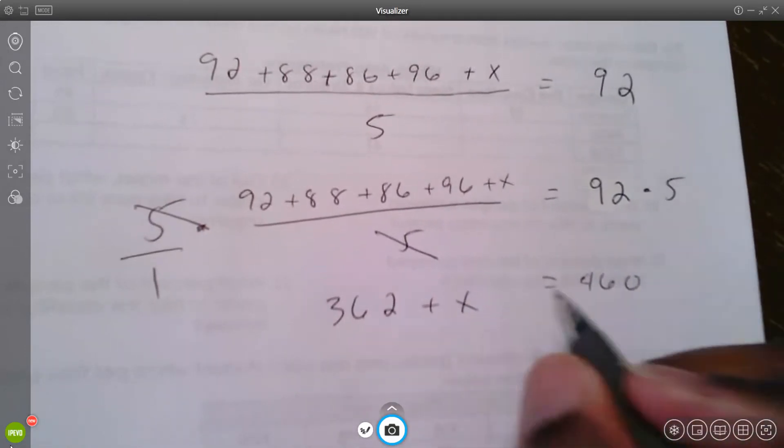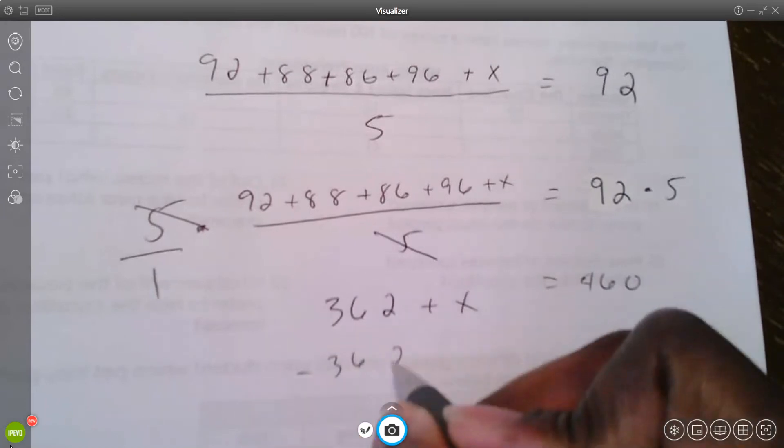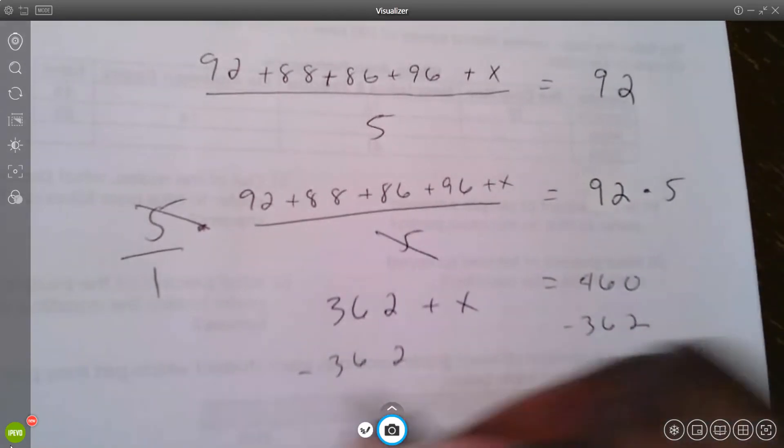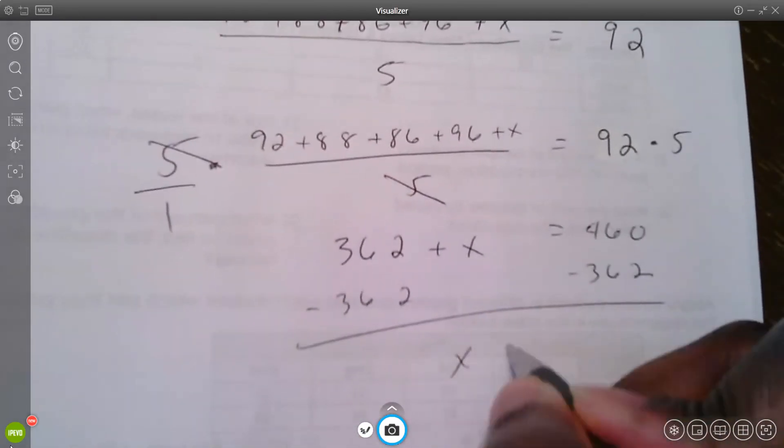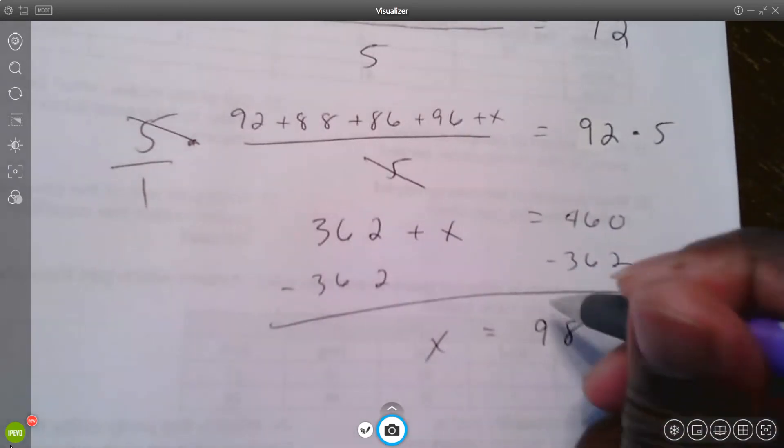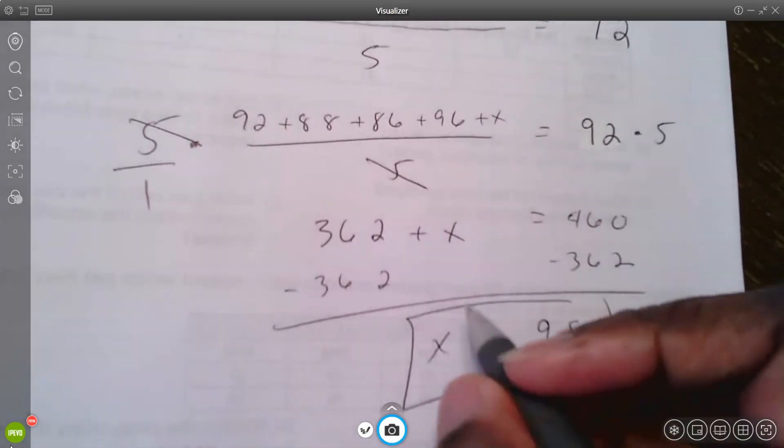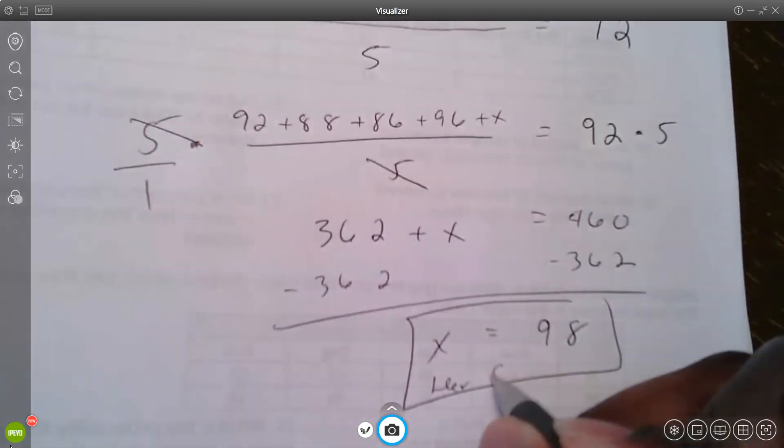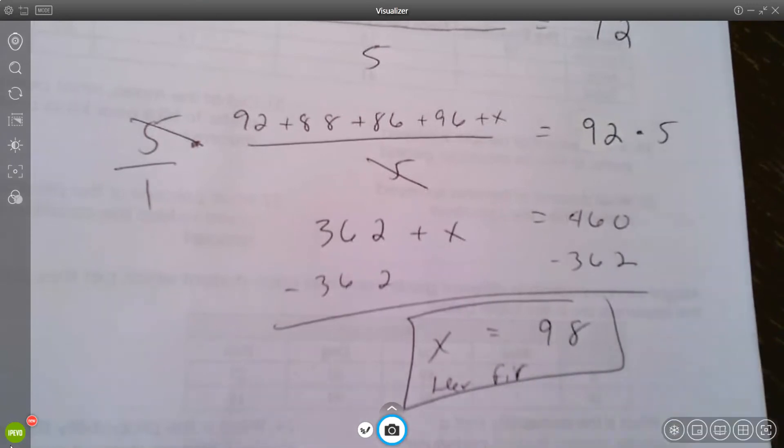Now finally, to figure out what x is, you subtract 362 from both sides. X should be... it was 98, yeah. So it's 98. So her fifth test score needs to be 98, and that's it.